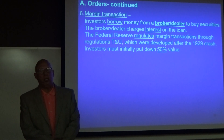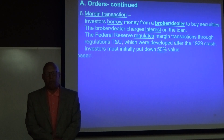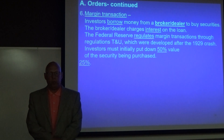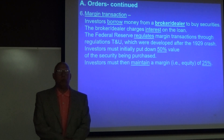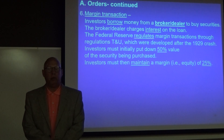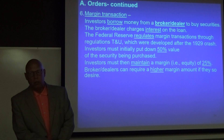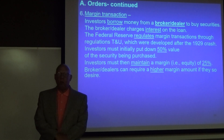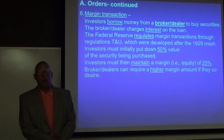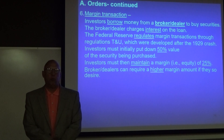Investors must initially put down 50% of the value of the security being purchased — that's the initial down payment. Investors must then maintain a margin or equity of 25%. Broker-dealers can require a higher margin amount if they desire, but Regulations T and U set 50% and 25% as the minimums.